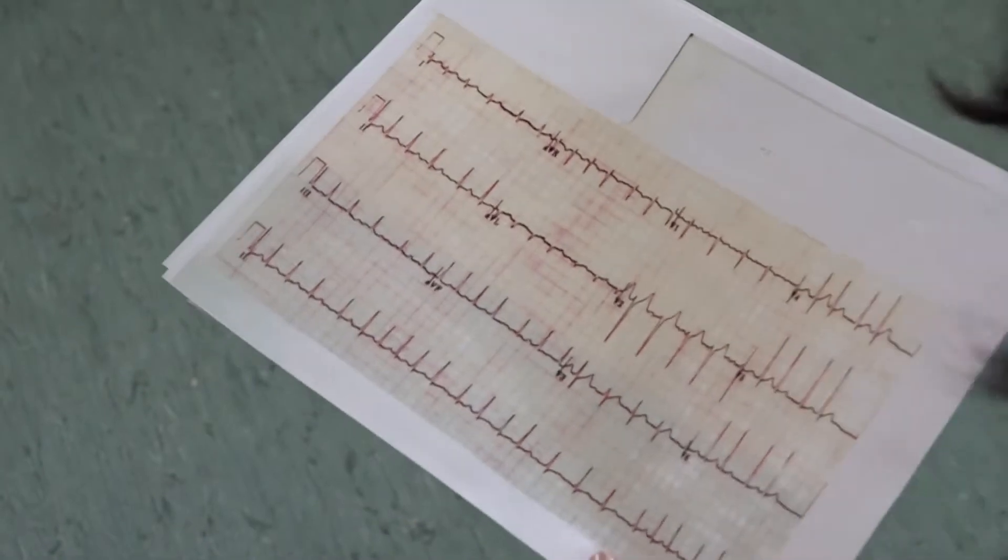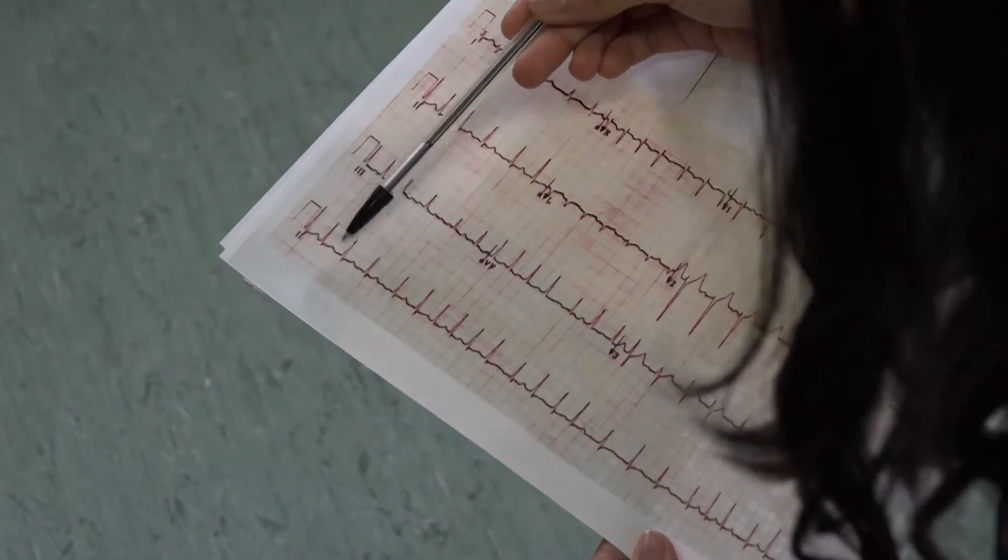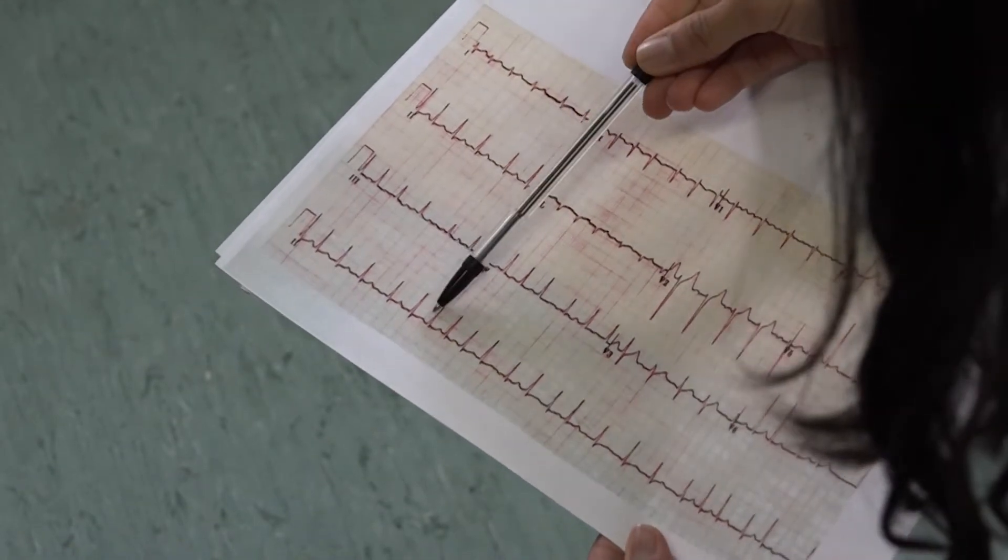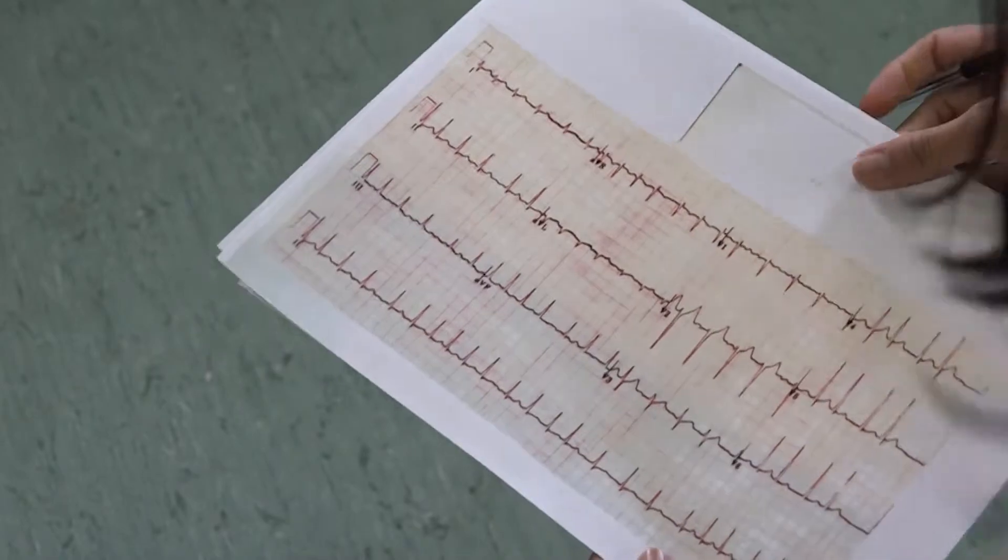This is the ECG we looked at earlier and as you can see on the rhythm strip, there are no clear P waves preceding the QRS complexes, which is suggestive of atrial fibrillation.